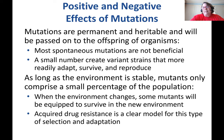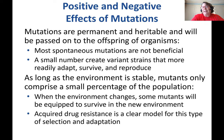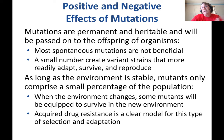Drug resistance is a clear example of this type of selection and adaptation. It doesn't matter if you don't have any exposure to a particular antibiotic — resistance or susceptibility is irrelevant until the antibiotic enters the environment. Any organism not resistant to it will be killed, but those with resistance will survive and become the dominant strain.